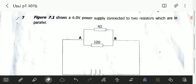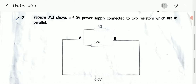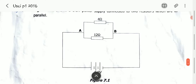Question 7 reads: Figure 7.1 shows a 6V power supply connected to two resistors which are in parallel. So our resistors are in parallel — we have a 4 ohm resistor and a 12 ohm resistor connected to a 6V power supply.